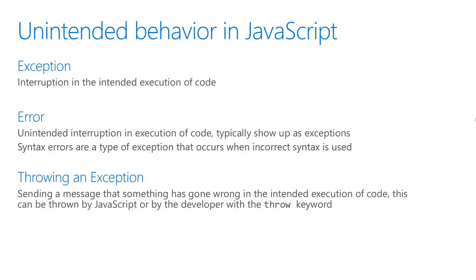Exceptions are interruptions in the intended execution of code. This is typically caused by errors. Errors are when things go wrong in our code. For example, if you write incorrect syntax in JavaScript, sometimes your code won't execute at all. You can think of errors as what went wrong in your code, and exceptions as where and when it went wrong. When something goes wrong in your code, you'd like to know why. So when an exception is thrown, it carries a message telling you what went wrong in your code.